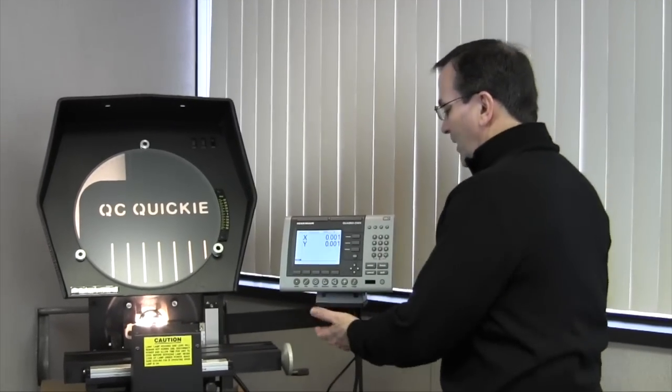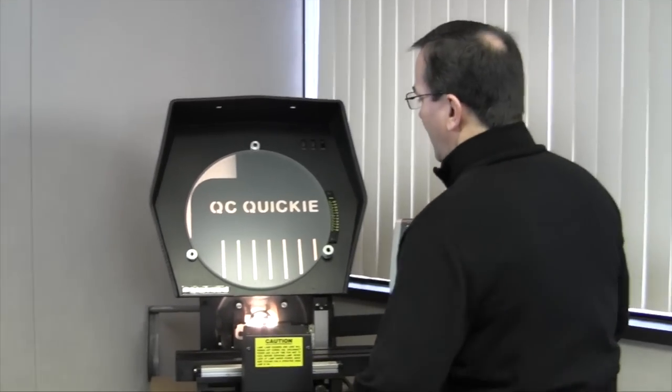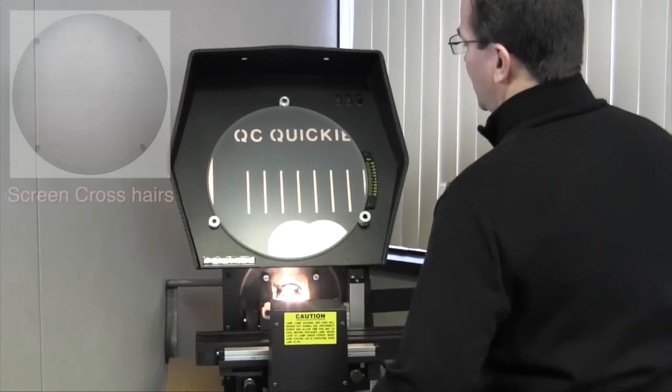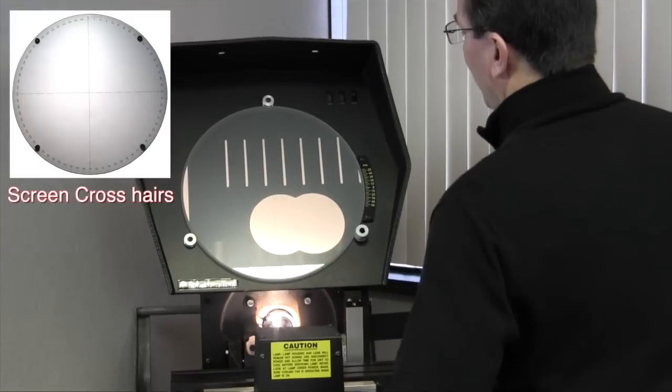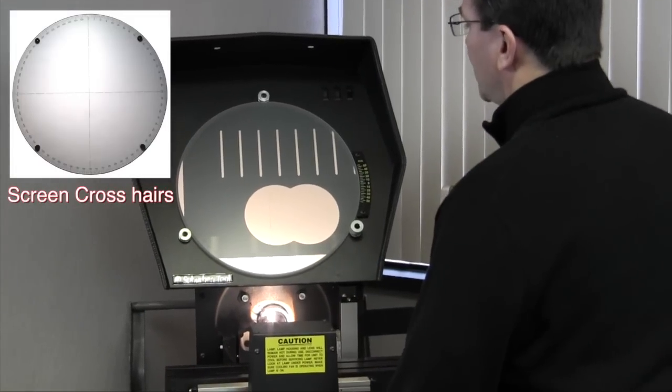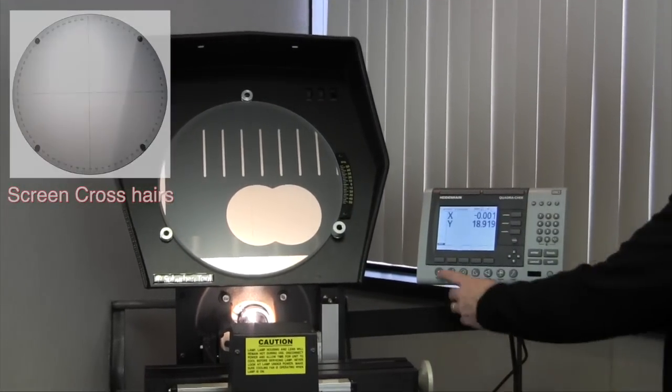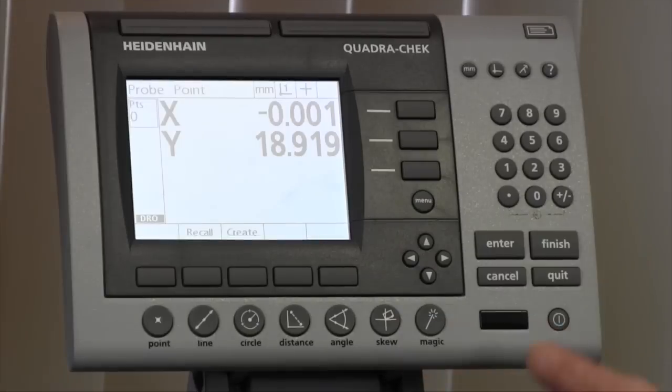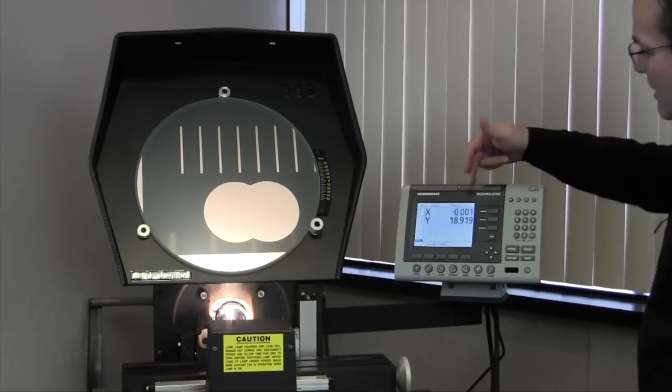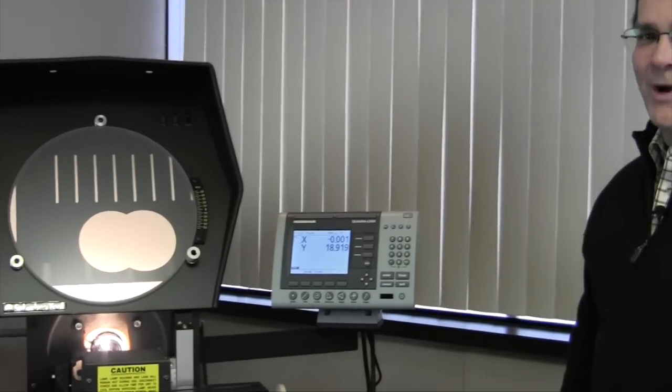So the first thing we're going to do, if you want to know where a point is on your part, you just put your crosshairs up there, hit the point, enter. Now we know where that point is.